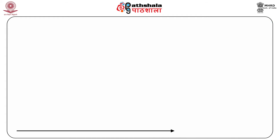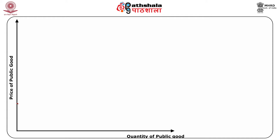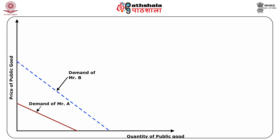Let us now look at the allocation of resources under the public good mechanism. Public goods are equally available to all; even if individual demand curves are different, individuals cannot consume different amounts of a public good. In this case, rather than horizontal addition, vertical addition of individual pseudo-demand curves of Mr. A and Mr. B is done. By vertically adding the individual pseudo-demand curves, the total demand curve for the social good can be estimated.